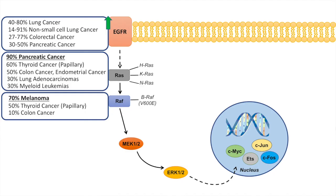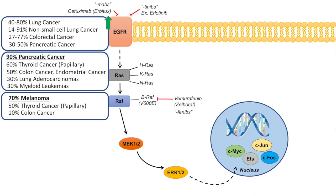For chemotherapy drugs targeting these proteins: with the EGFR receptor, we can use MABs — drugs with '-mab' at the end of their name. One example is cetuximab (Erbitux), which inhibits the binding of ligands to the receptor. Drugs with '-tinib' at the end, such as erlotinib, can also target EGFR. The V600E-mutated BRAF can be inhibited with vemurafenib (Zelboraf), and other '-fenib' drugs can target RAF proteins as well.